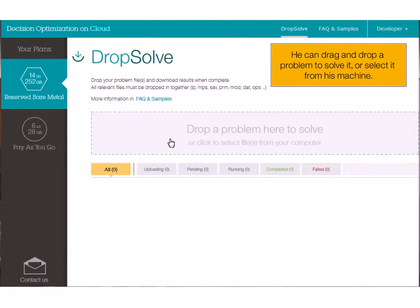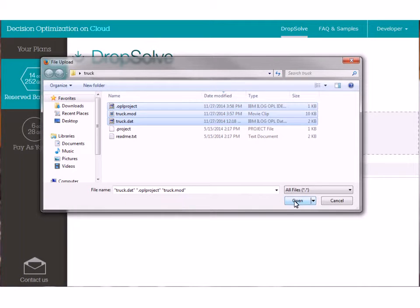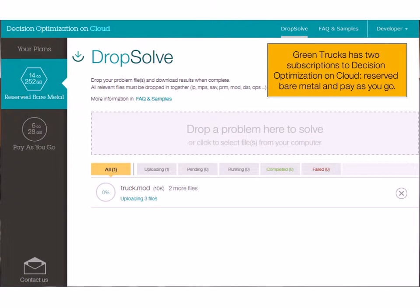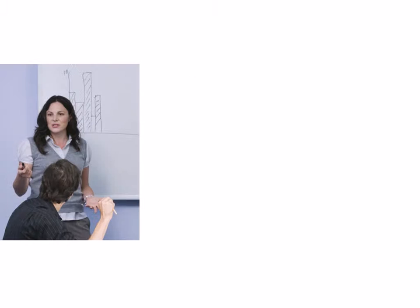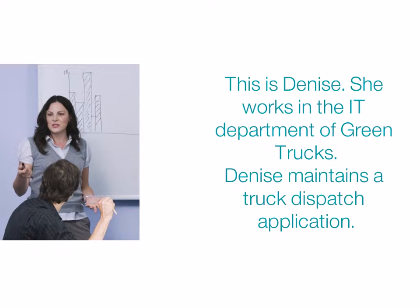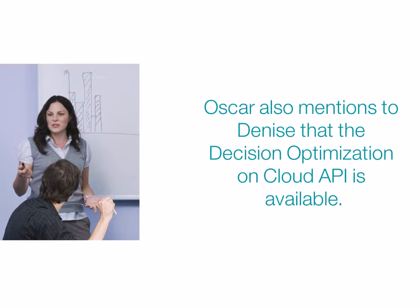He can drag and drop a problem or select it from his machine. Denise works in the Green Trucks IT department and maintains a truck dispatch application. Oscar tells Denise about his model and the improvements it could bring to her application. He also tells her about DropSolve and the Decision Optimization on Cloud API.